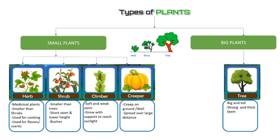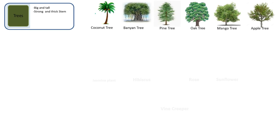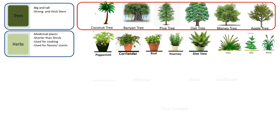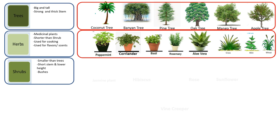Before heading to the questions, let's look at examples of different types of plants. Trees are big, tall, and strong with a thick stem — examples include coconut tree, banyan, pine tree, oak tree, mango, and apple tree. Next are herbs — medicinal plants, shorter than shrubs, used for cooking and flavoring. Examples include incense, peppermint, coriander, basil, rosemary, grass, mint, and wheat.